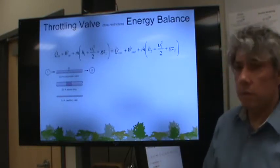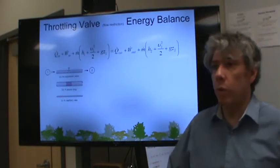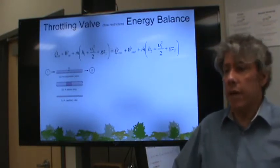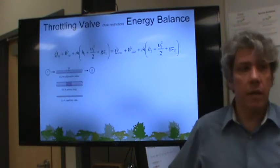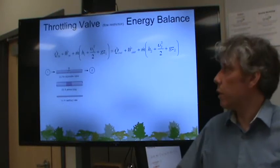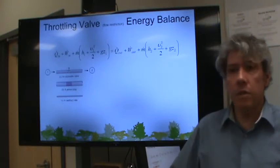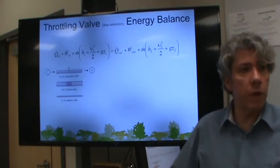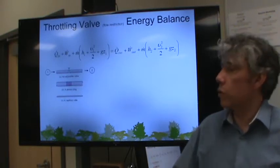What about a throttling valve? Let's go back to trying to figure out what we need to cross off. A throttling valve is a valve that you set at some level, typically. In a steady state, it doesn't really change much. And all it does is reduce the pressure of the fluid across it. What terms do you think we could cross off here?